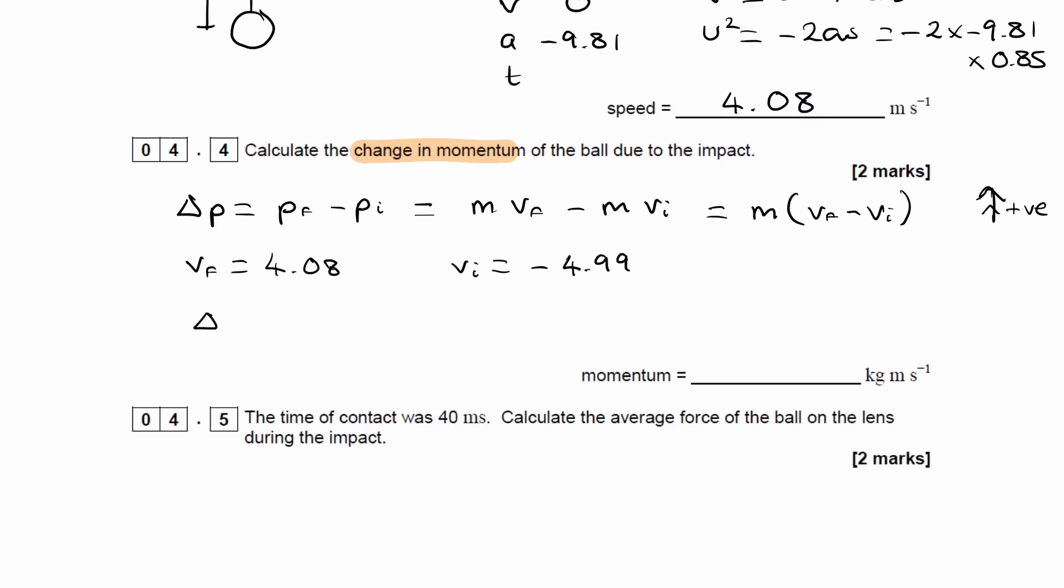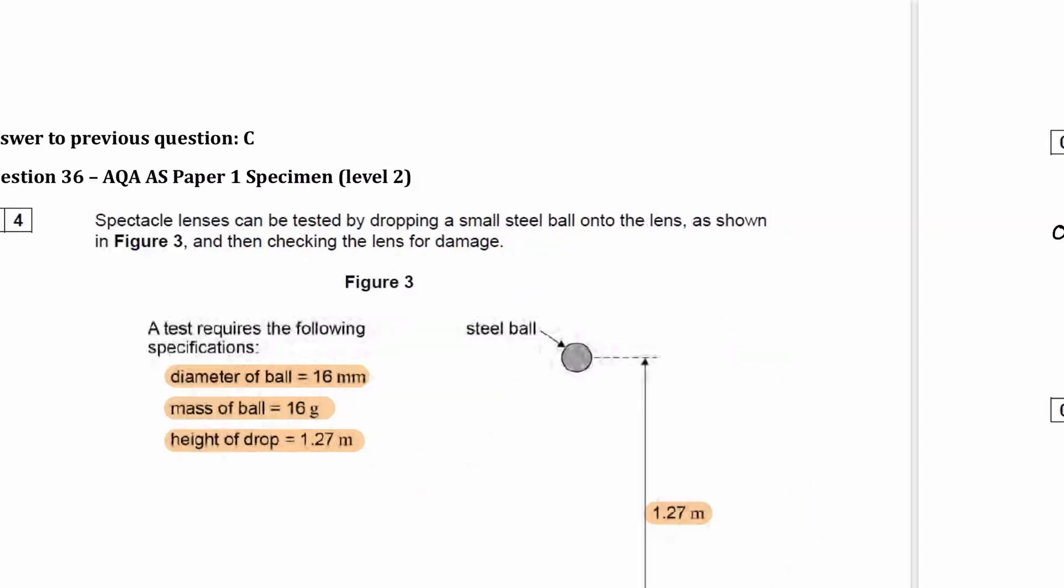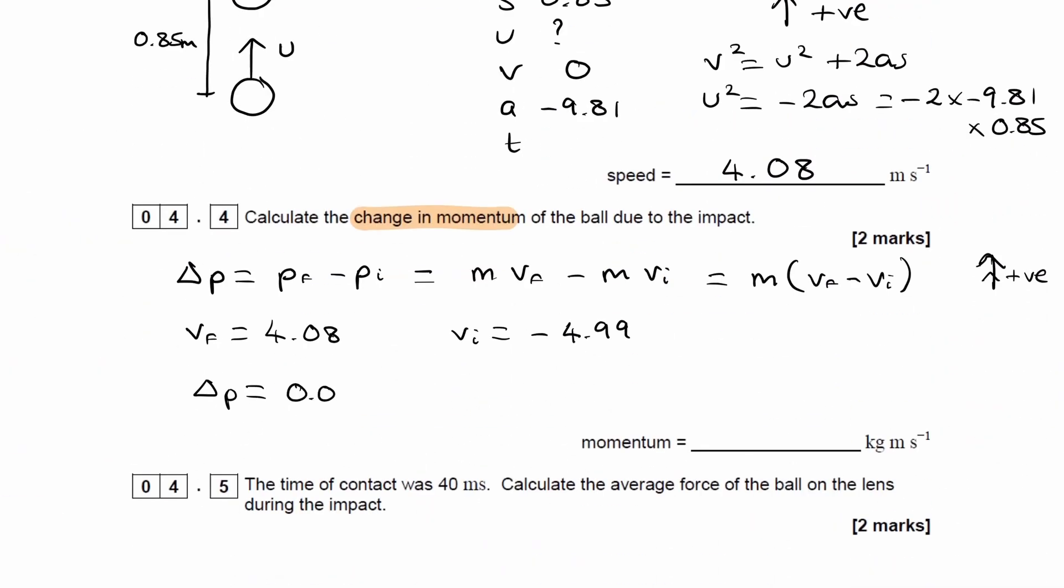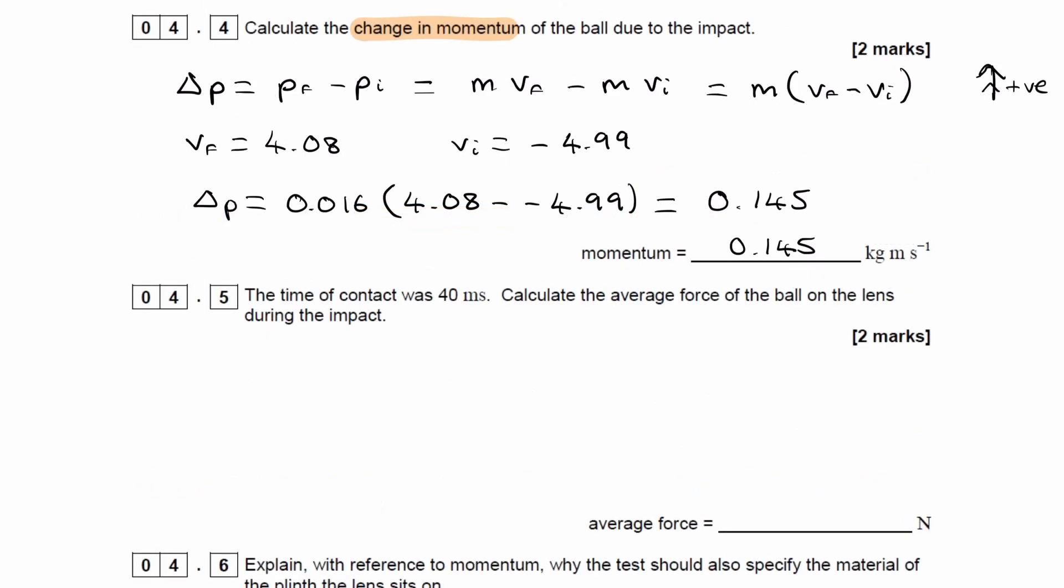So then the change in momentum will then be mass multiplied by, I guess I'll change the mass now. So the mass was 16 grams. So 0.016 multiplied by, so Vf was 4.08 minus -4.99. So minus -4.99. Type this in. And we get 0.145.